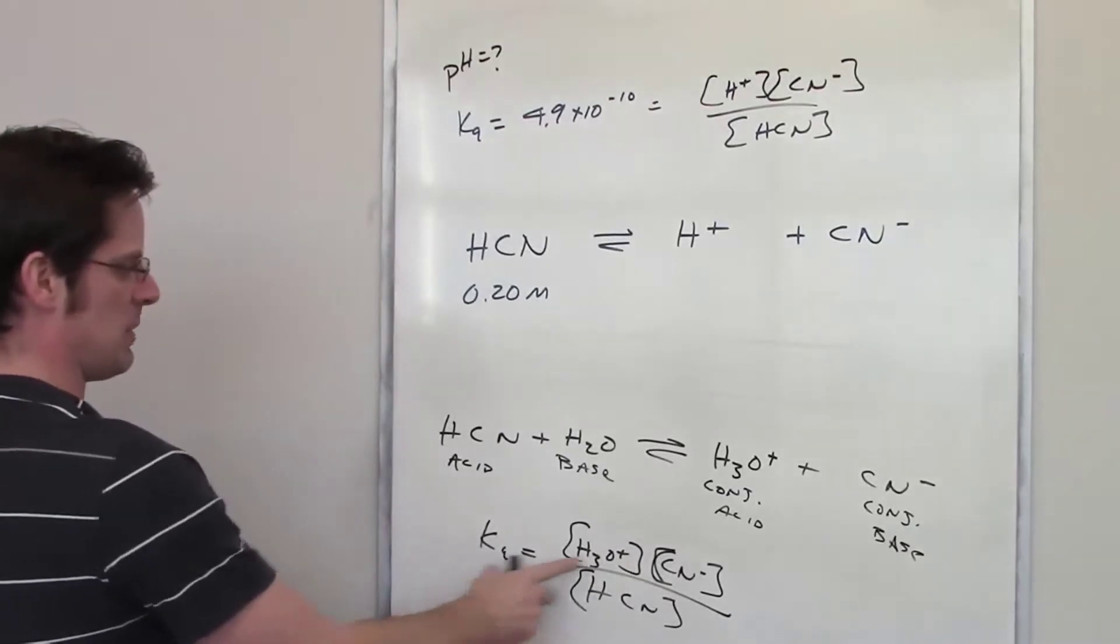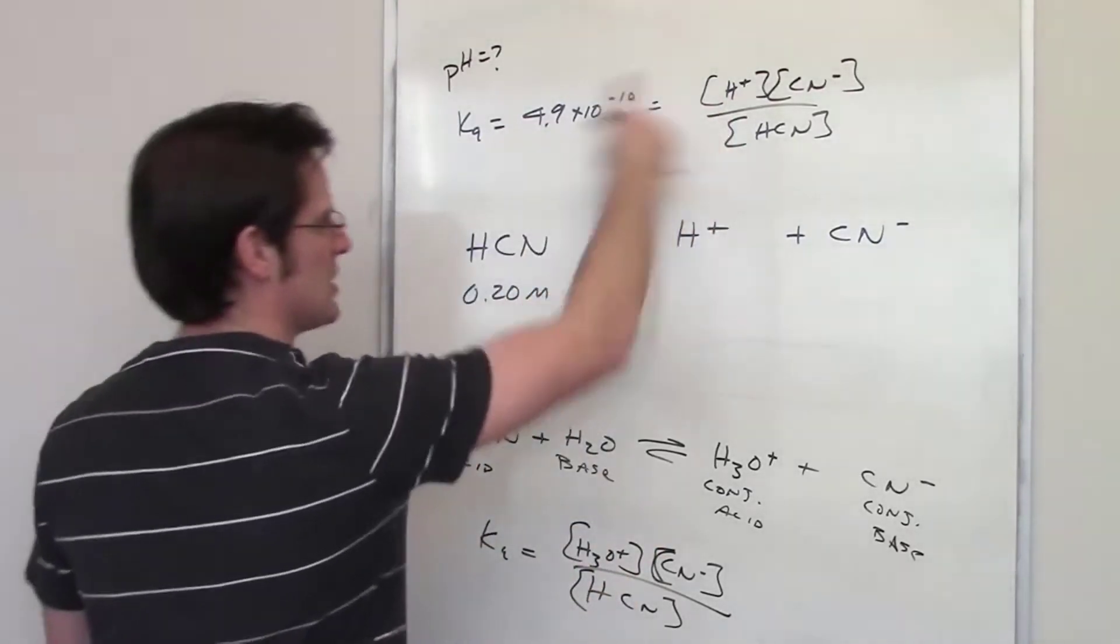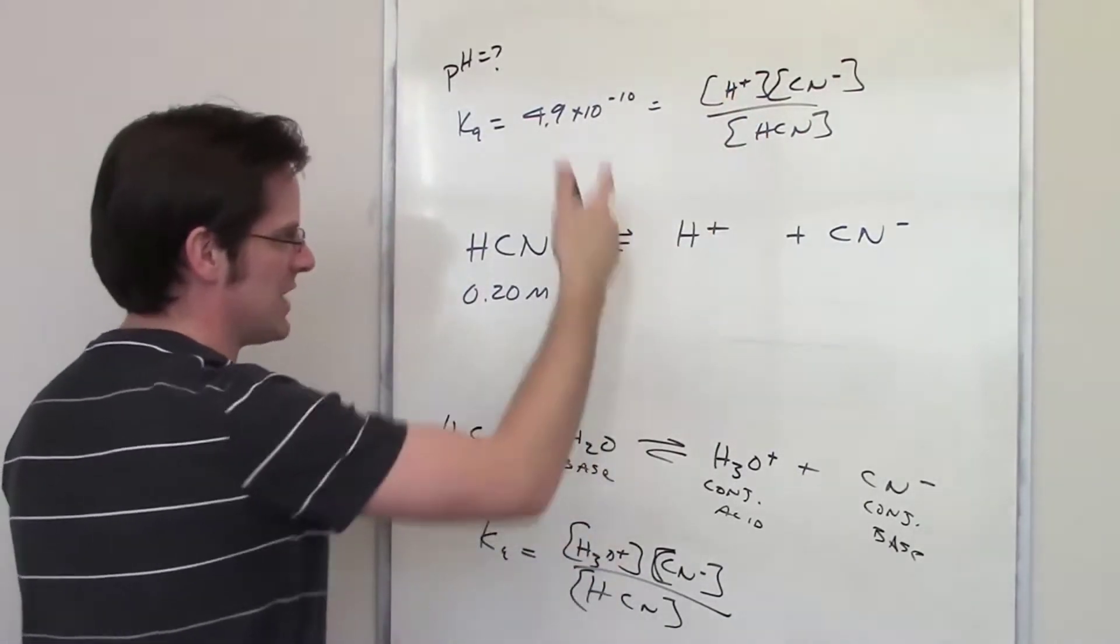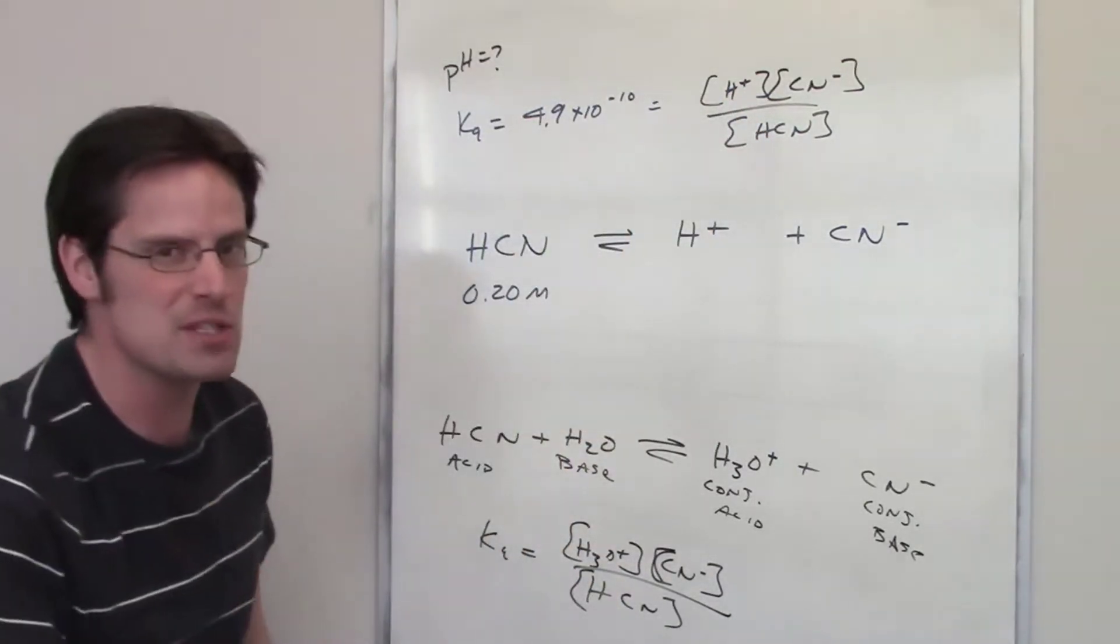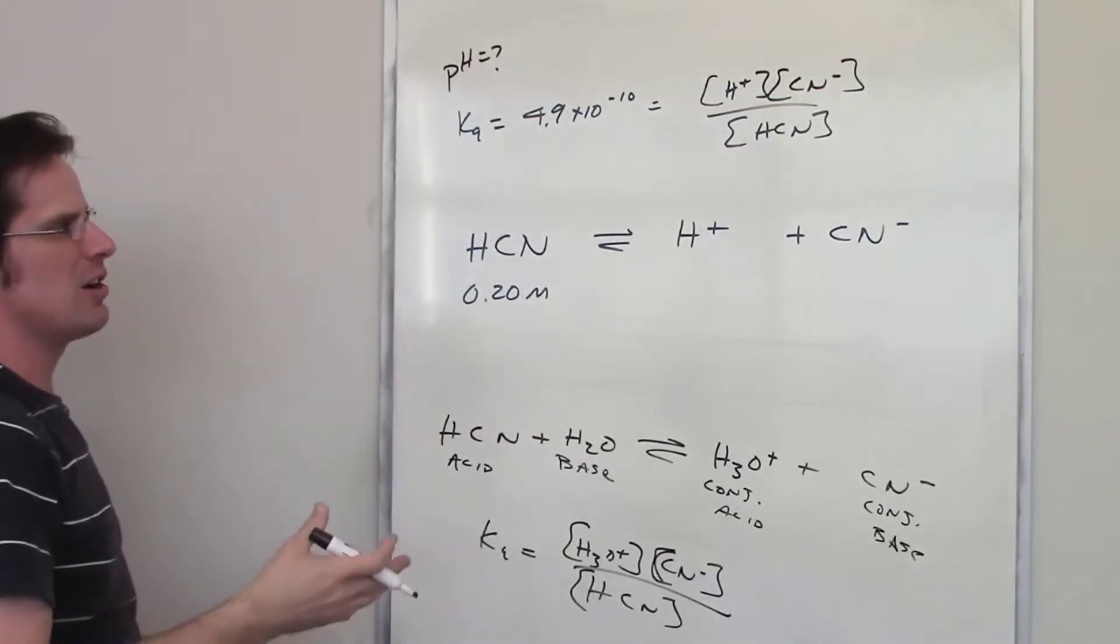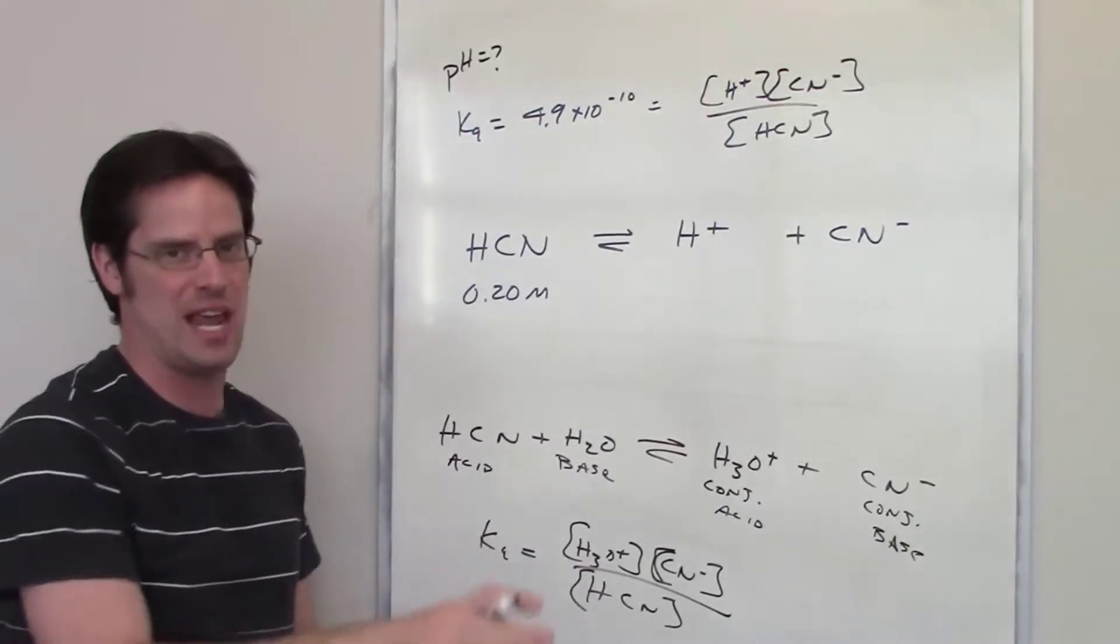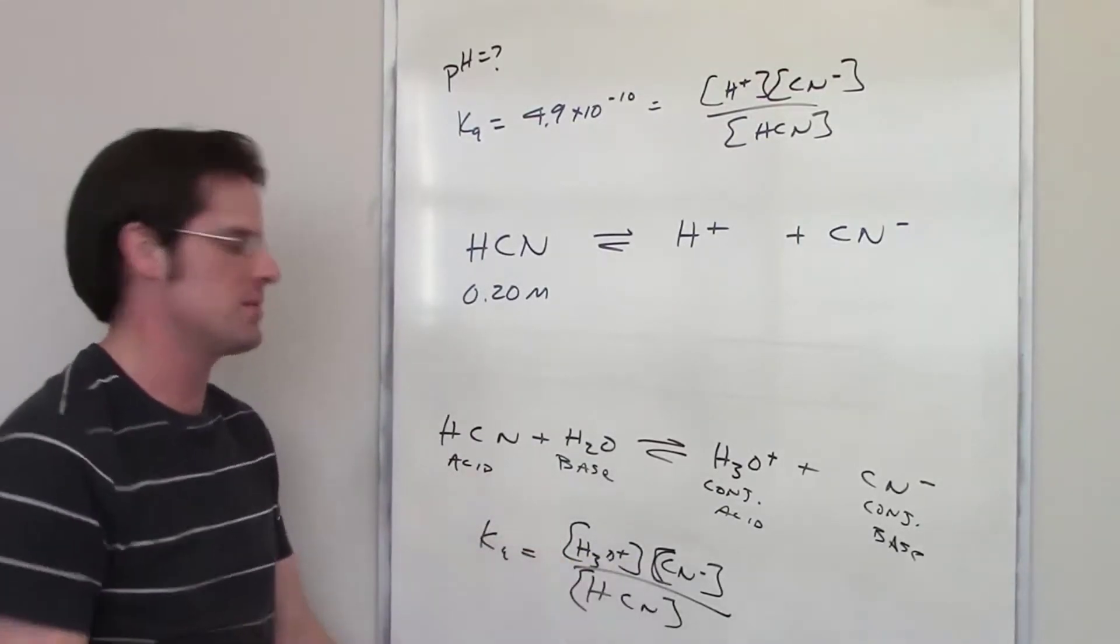What's the difference between the K expression of this bottom thing and the K expression for this top thing? Well you should see that the only difference is the H plus and the H3O plus, one is substituted for the other. And that's why sometimes we say that H plus and H3O plus are kind of interchangeable. H plus is sort of the lazy person's way of writing H3O plus, at least in an aqueous equilibrium scenario.